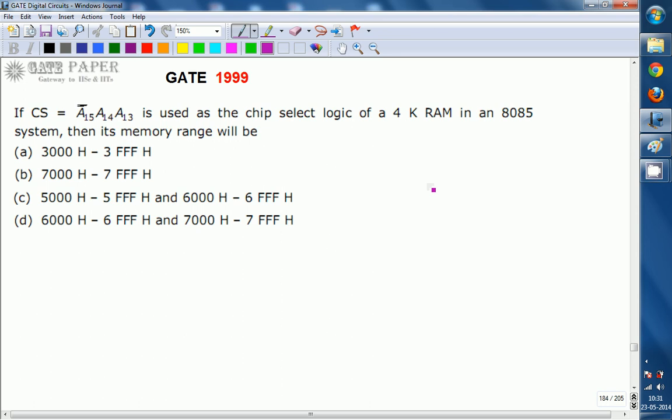Hello, we are discussing GATE 1999 EC paper. This question is related to digital circuits. If CS equals A15 bar A14 A13 is used as the chip select logic of a 4K RAM in an 8085 system, then its memory range will be what? What is its memory range if the chip select is A15 bar A14 A13?